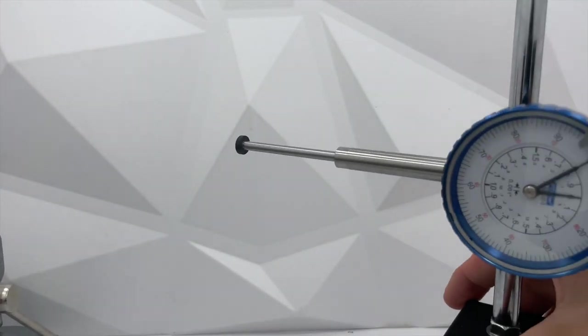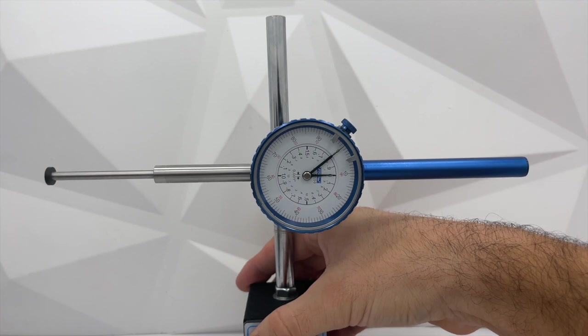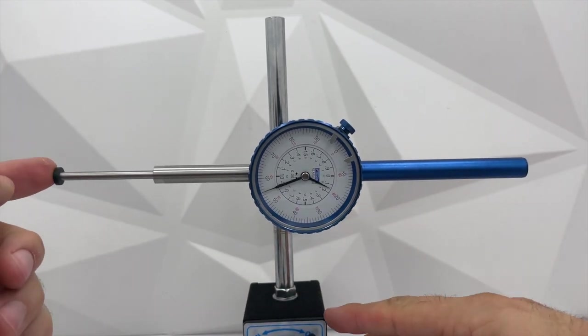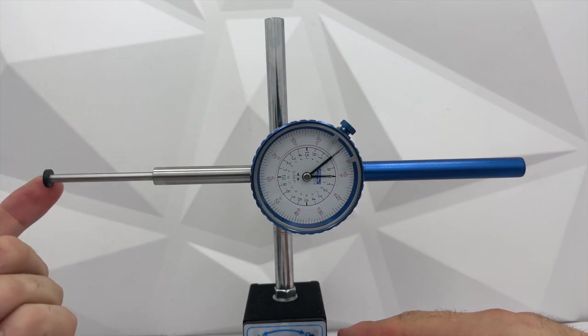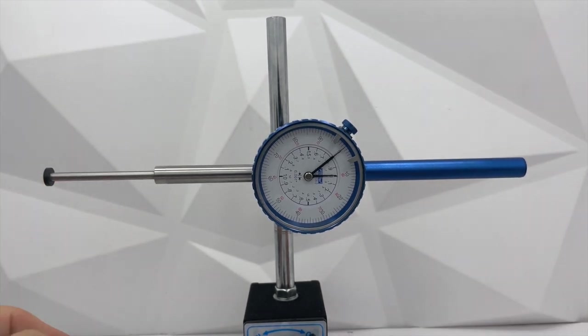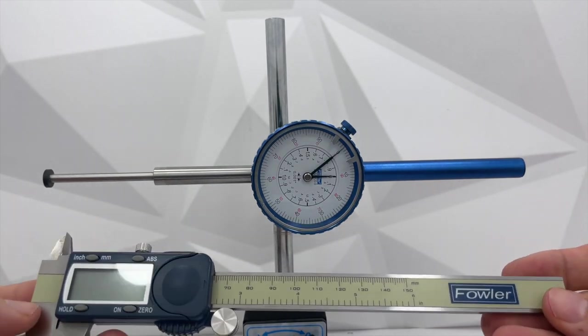And a dial indicator, which if you don't know what this is, it's a tool for allowing me to read very precise distances. And for it, I've installed this flat end contact point. And I also have my digital calipers here.